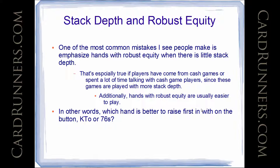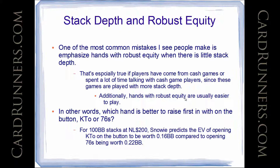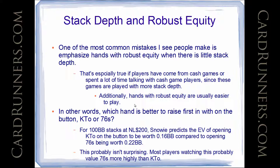In other words, which hand is better to raise first in on the button — king-ten offsuit or 7-6 suited? Well, there's no way to know for sure, but for 100 big blinds stack depth at no-limit 200, Poker Snowy predicts the expected value of opening king-ten offsuit on the button is worth 0.16 big blinds, compared to opening 7-6 suited which is worth 0.20 big blinds. This probably isn't surprising — most players watching this video probably value 7-6 suited more highly than king-ten offsuit. So if you think 7-6 suited is better than king-ten off, ask yourself why that is, given you're playing 100 big blinds deep.